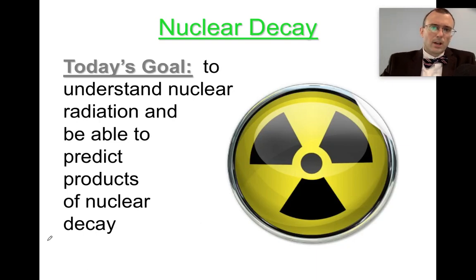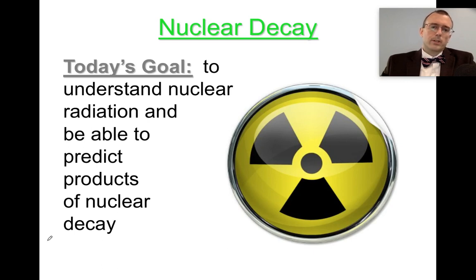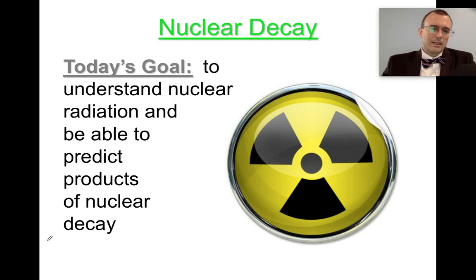Hello. Today we're going to be talking about nuclear chemistry. As we're talking about nuclear chemistry, we're going to try to understand what happens to the atom in nuclear chemistry, and help us to understand what nuclear decay is, how dangerous it is, and essentially the different types of nuclear radiation that there is. So let's jump into it.